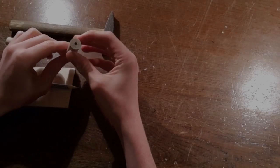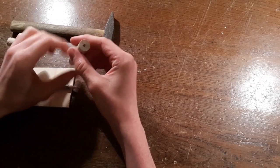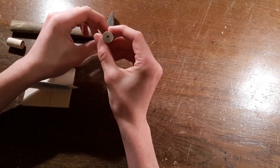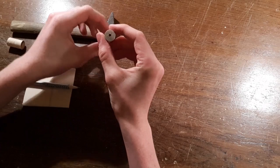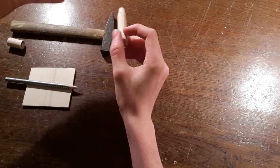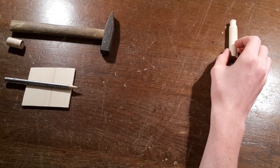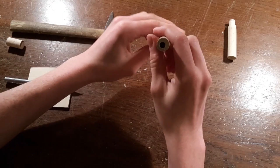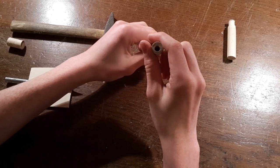All right, so we all know the problem. We want to drill a hole in the exact center of the dowel, just like this, but as we all know, just eyeballing it doesn't normally work. It just results in things like this. So that's not very on center.